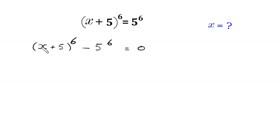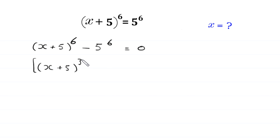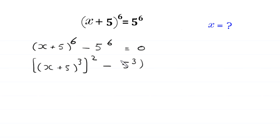Now (x + 5)^6 can be written as [(x + 5)^3]^2, and 5^6 can be written as [5^3]^2, so the equation becomes [(x + 5)^3]^2 minus [5^3]^2 is equal to 0.